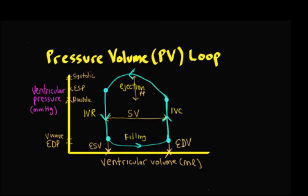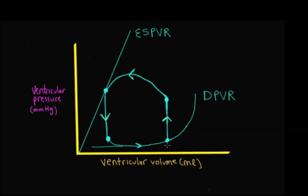Now with a basic pressure-volume loop with labels stripped away, as the ventricle fills, the end diastolic pressure-volume point lies on the diastolic pressure-volume relationship. The end systolic pressure-volume point lies on the end systolic pressure-volume relationship, and that line starts at about the origin. Those two relationships are very important in analyzing changes in preload, afterload, and inotropic state.